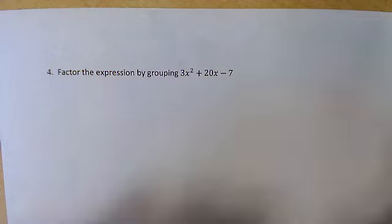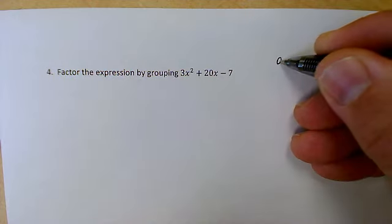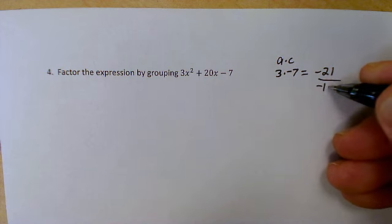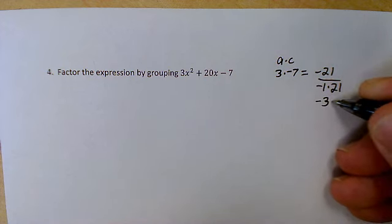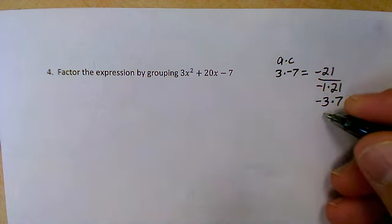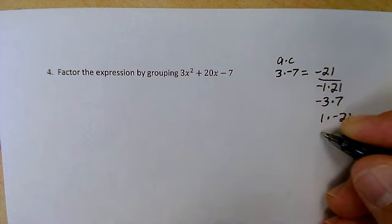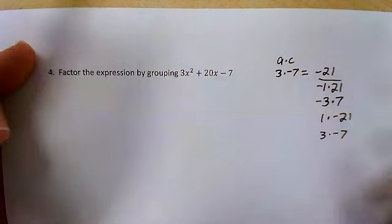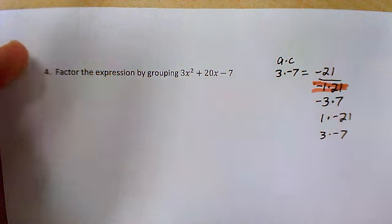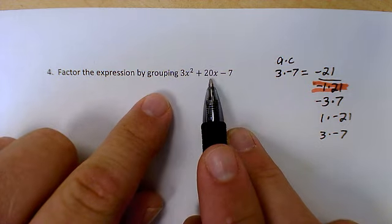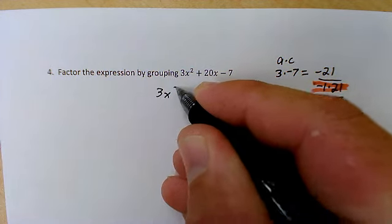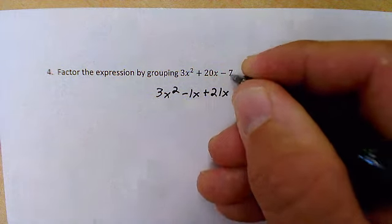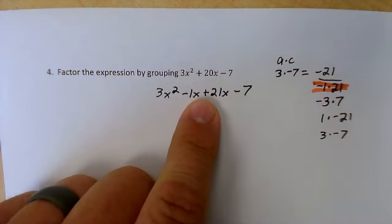Alright, so on this problem it says factor the expression by grouping. That's actually what we just did. So we again do a times c. a is 3, c is -7, so that's -21. And I'll write down all the things that can possibly multiply to -21, like -1 times 21, -3 times 7. That's actually it. Well, you could have the negative on the other value. So from this list, I would be choosing to add up to positive 20: -1 plus 21 is what I'm going to use. And that's going to show me how to split the middle term there. So 3x² will now be -1x + 21x, and then -7. So I've rewritten the original expression using the value I found.